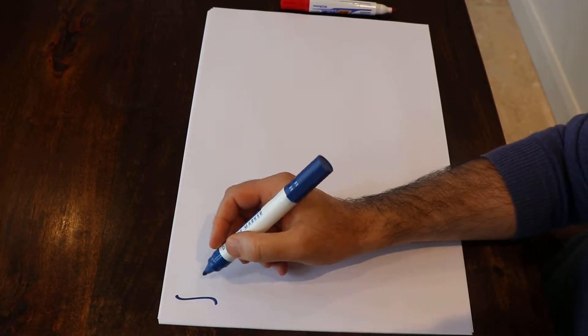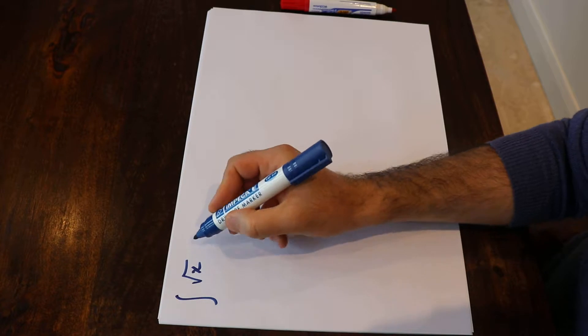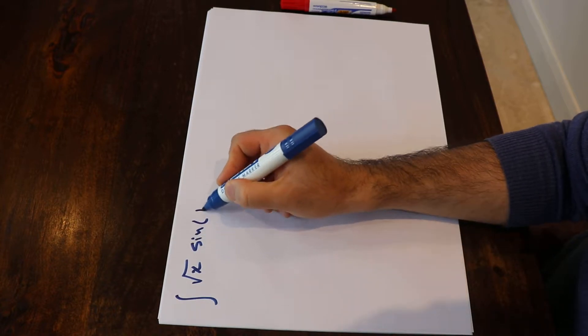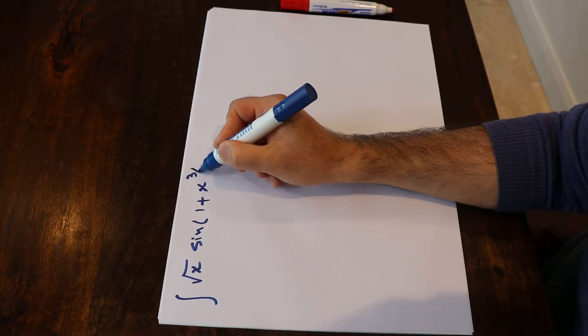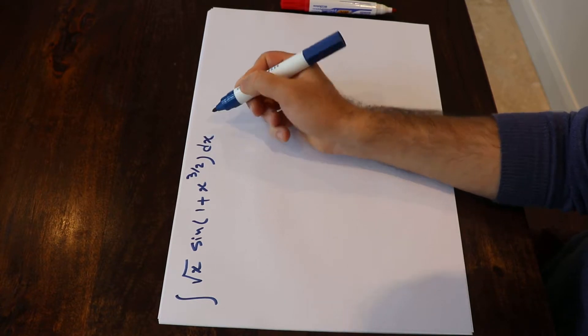Hello, I'm going to show you how to calculate the integral of the square root of x times sine of 1 plus x to the power of 3/2, times dx.